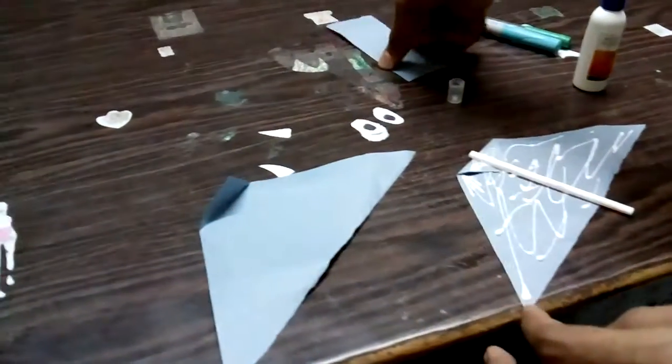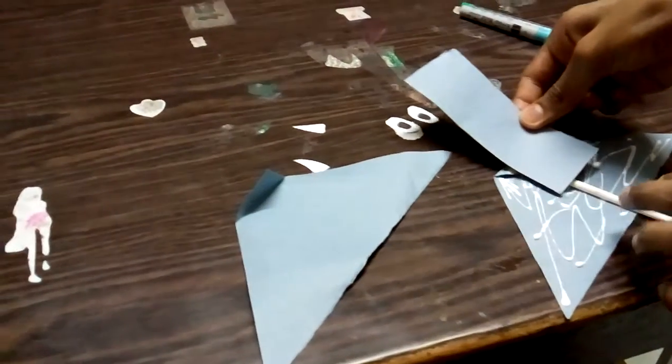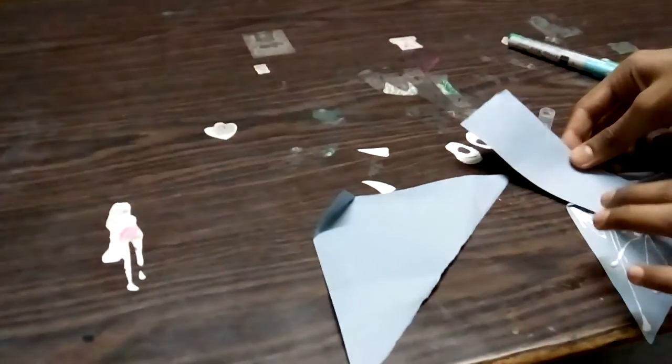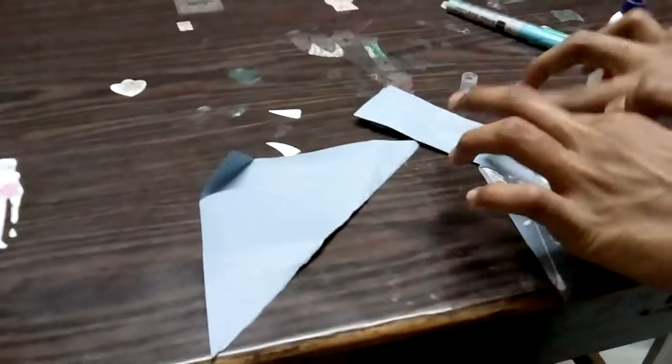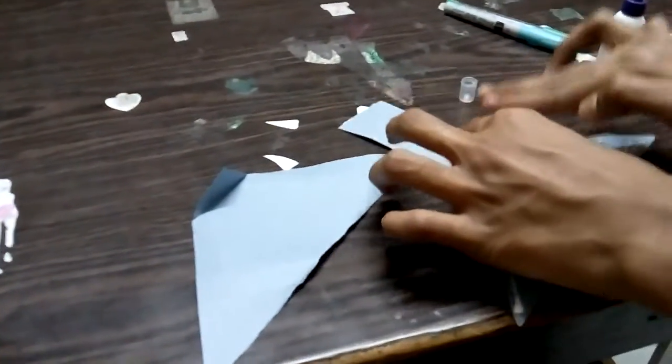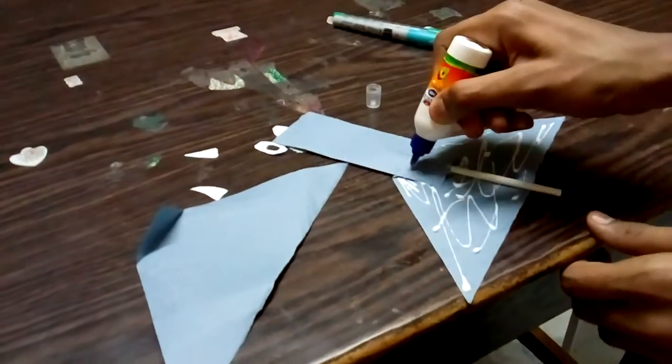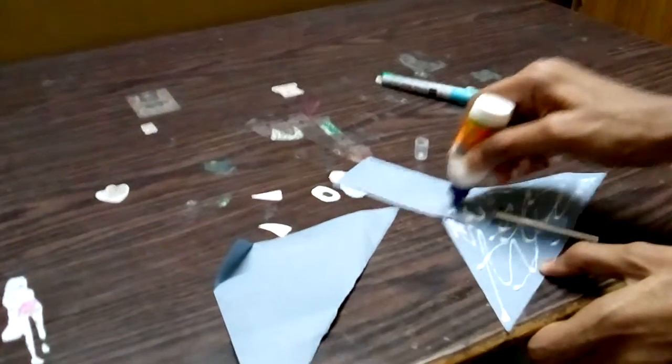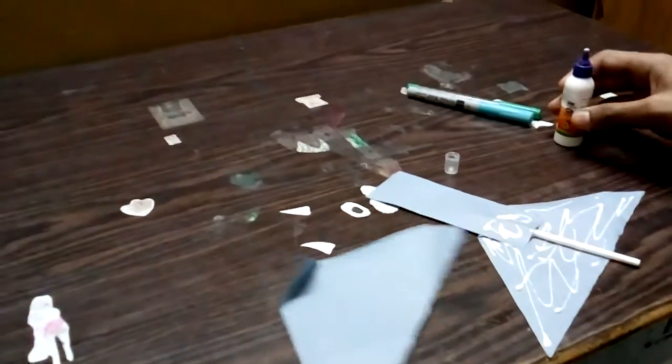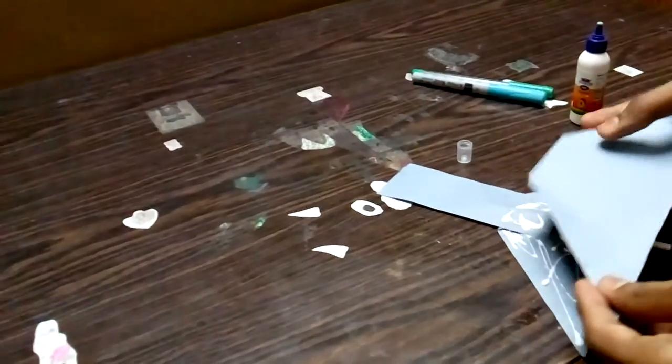Now take the trunk and paste it over here. Again add some glue over here. Now take this piece and paste it in this way.